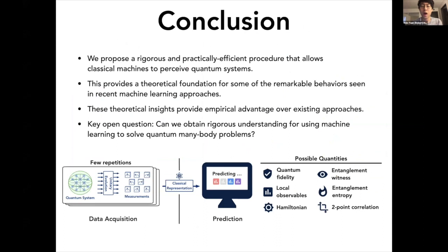To conclude, we propose a rigorous and practically efficient procedure that allows classical machines to perceive quantum systems. This provides a theoretical foundation for some of the very remarkable behavior that we have seen in recent machine learning approaches. And furthermore, these insights also provide empirical advantage over some of the existing approaches. One of the key open questions that seemed very interesting to us is whether we could build upon this and obtain a rigorous understanding for using machine learning to solve quantum many-body problems. Thank you for listening.